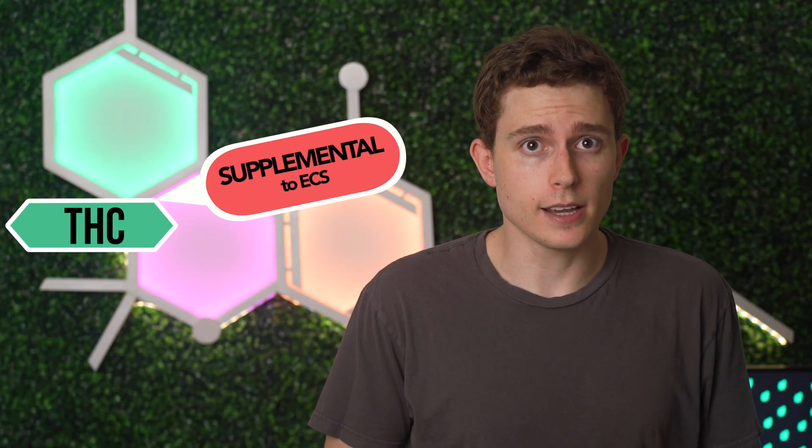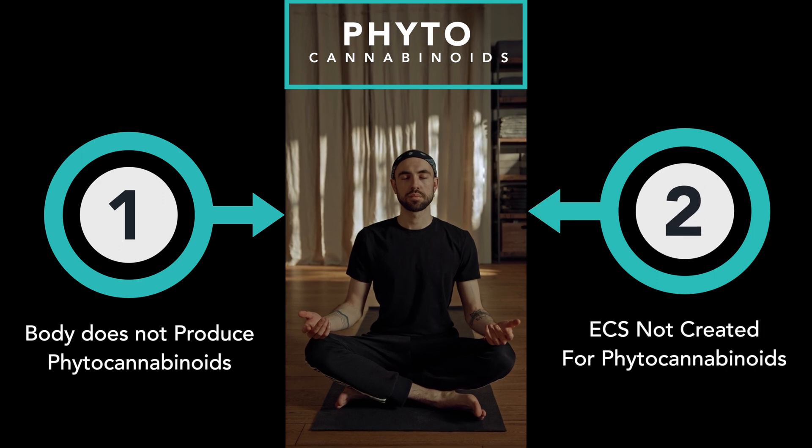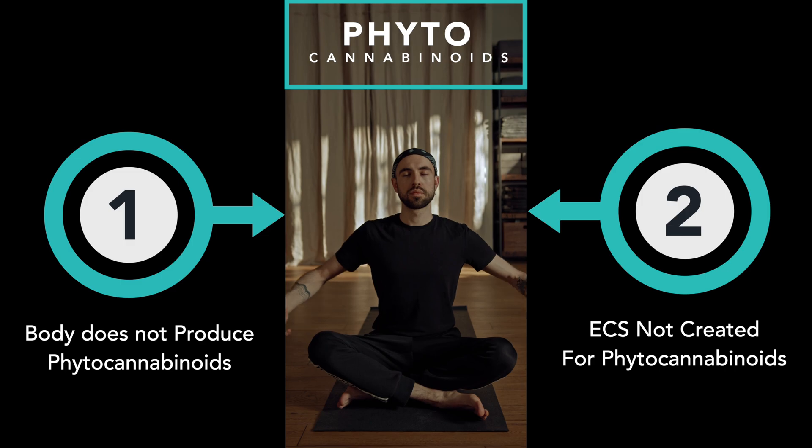Think of phytocannabinoids as supplemental to the ECS. Our body doesn't produce them naturally, nor is it made for them. But despite this, phytocannabinoids can and do imitate endocannabinoids. But they also do other things like get you high as a kite.